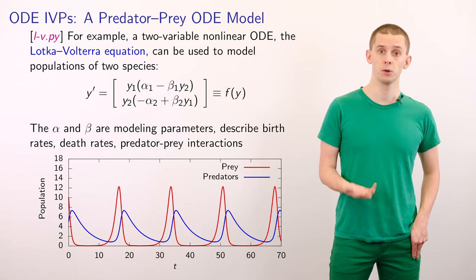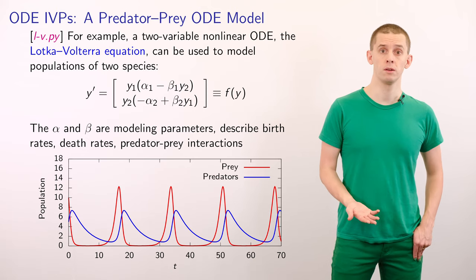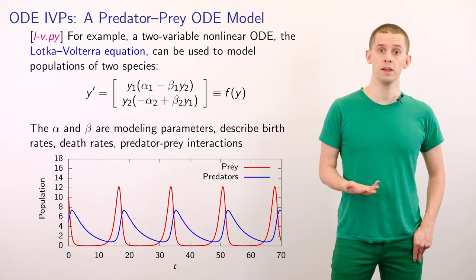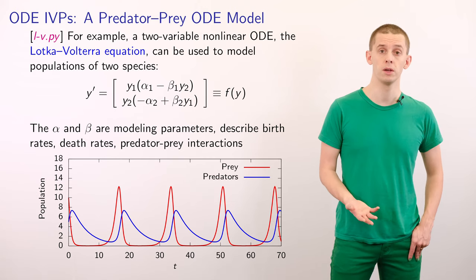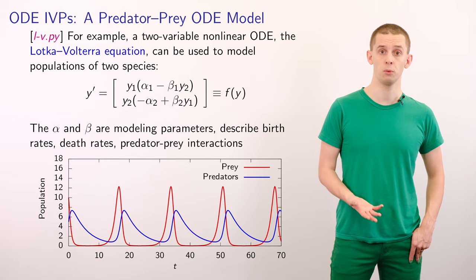If we look now at the equation for the predators, then as they are eating the prey, they grow in population. So we have a term plus beta2 times y1 times y2.